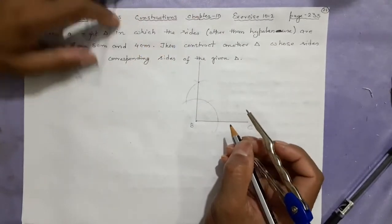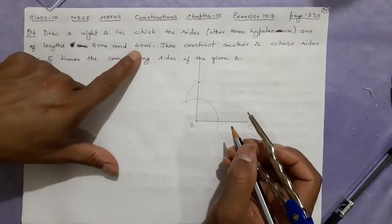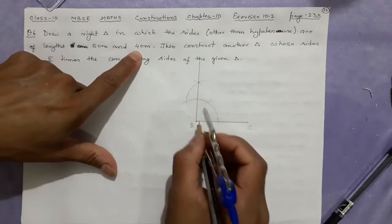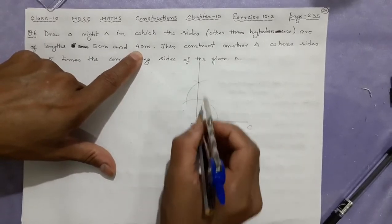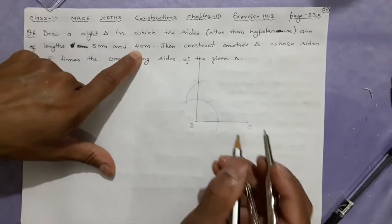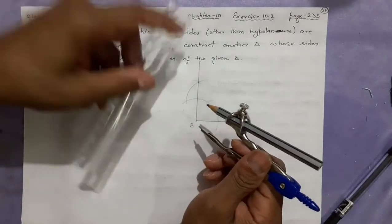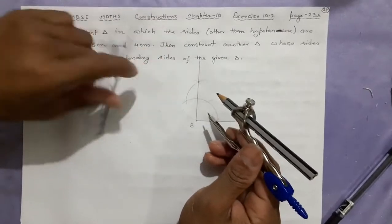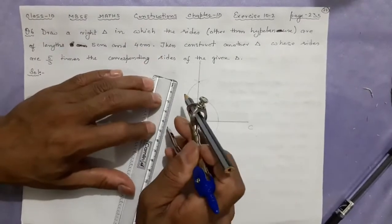Where is A? It is 4 centimeter because BC is 5 and AB will be 4. The hypotenuse we don't need to measure — it will come automatically. This will be 4 centimeter.